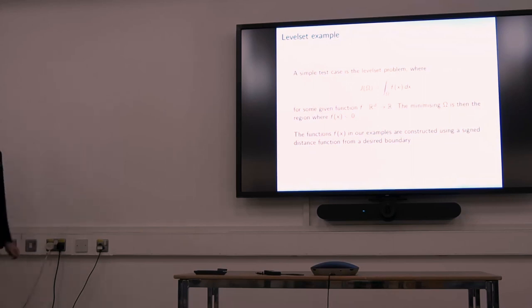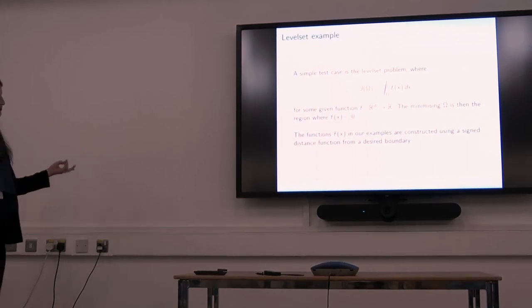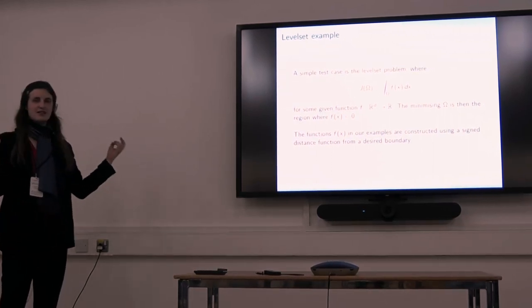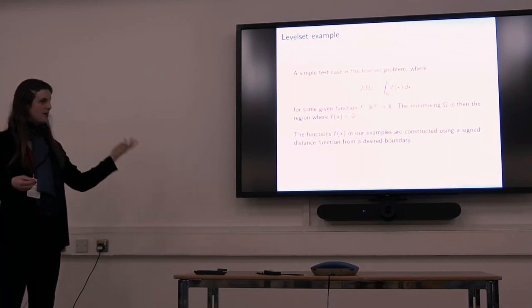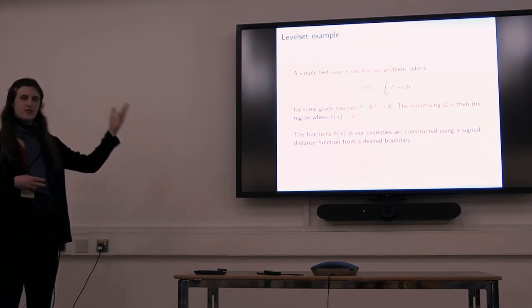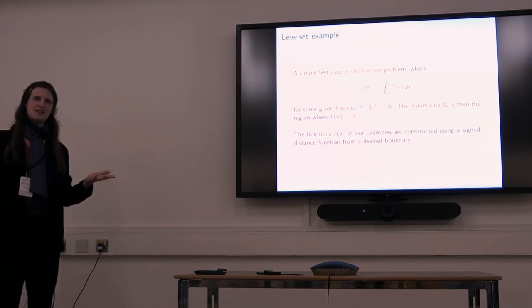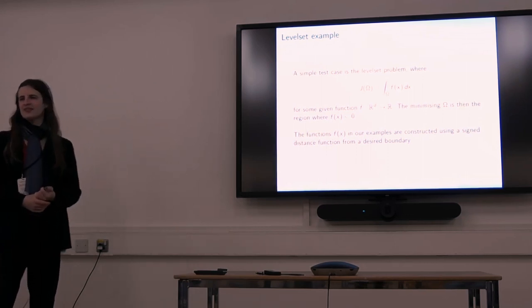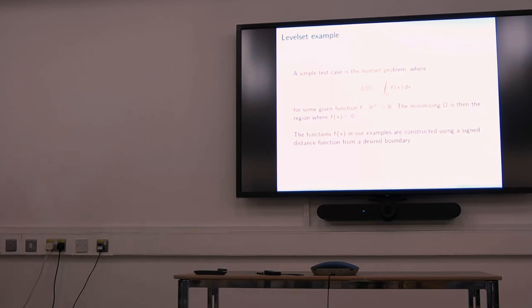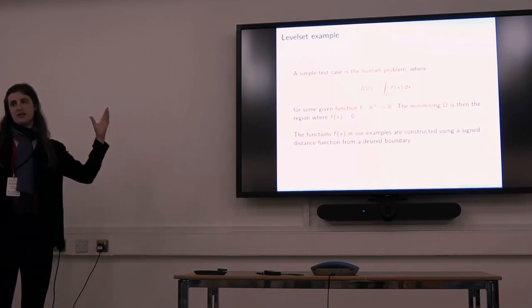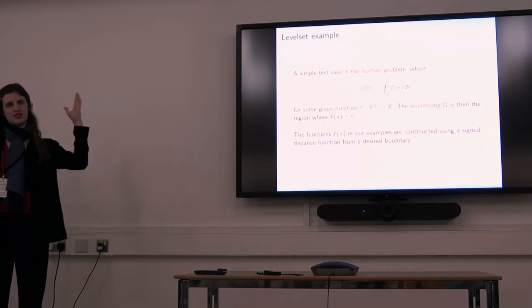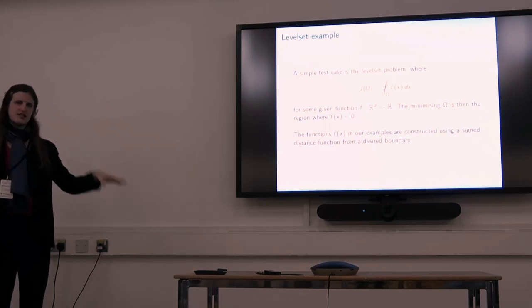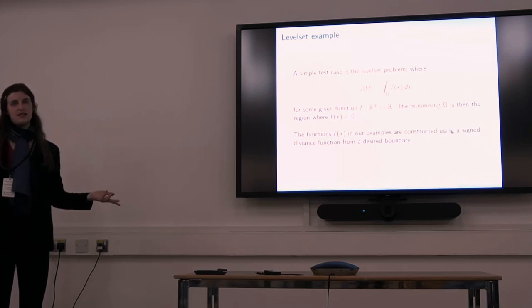We should probably test it. Simplest test case: level set problem for shape optimization. You have some function f, it's a fixed function, basically a parameter function, and then it's going to go to the region where it's negative because that's going to minimize the integral over the region. We construct them basically as - you have some shape, this function just looks like a pyramid for a regular polygon, or for a circle it's a cone.